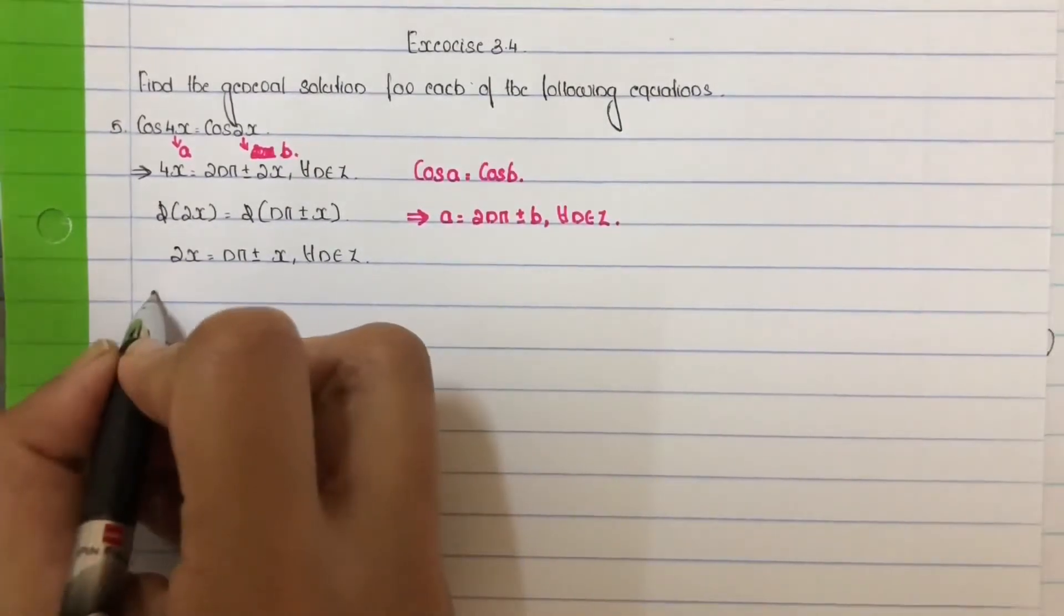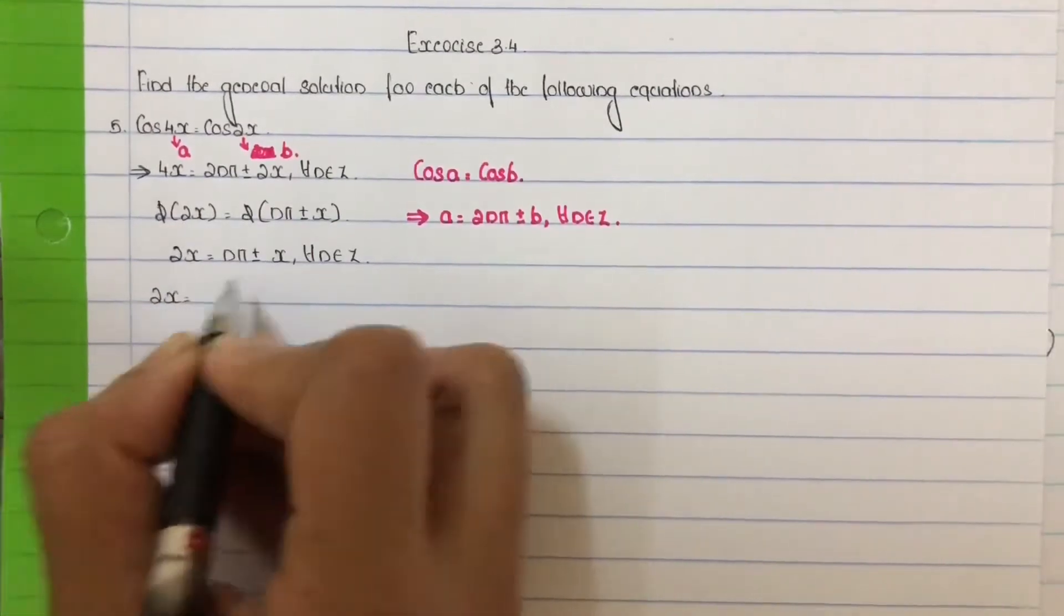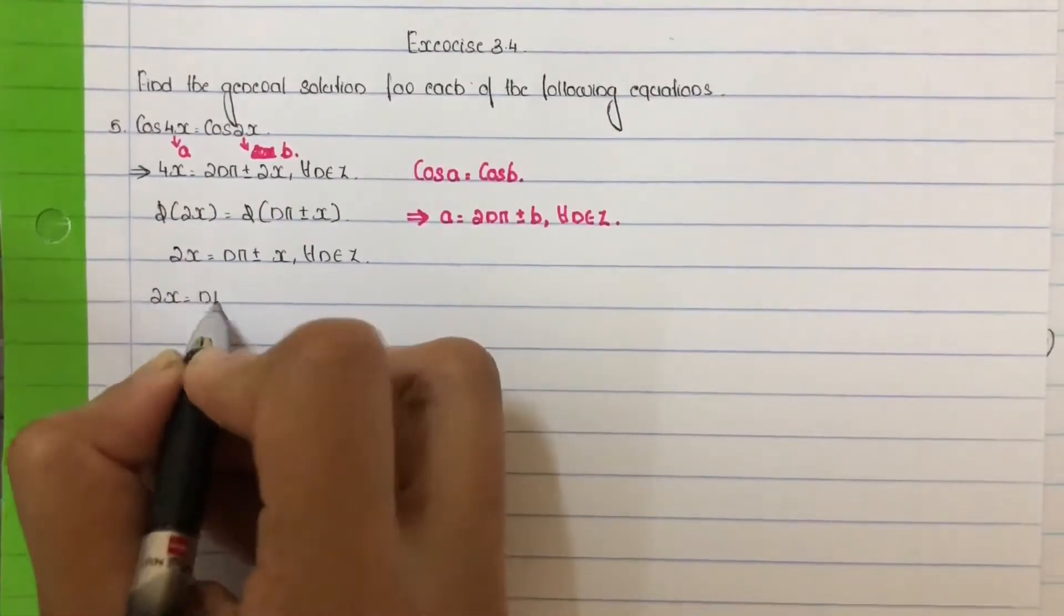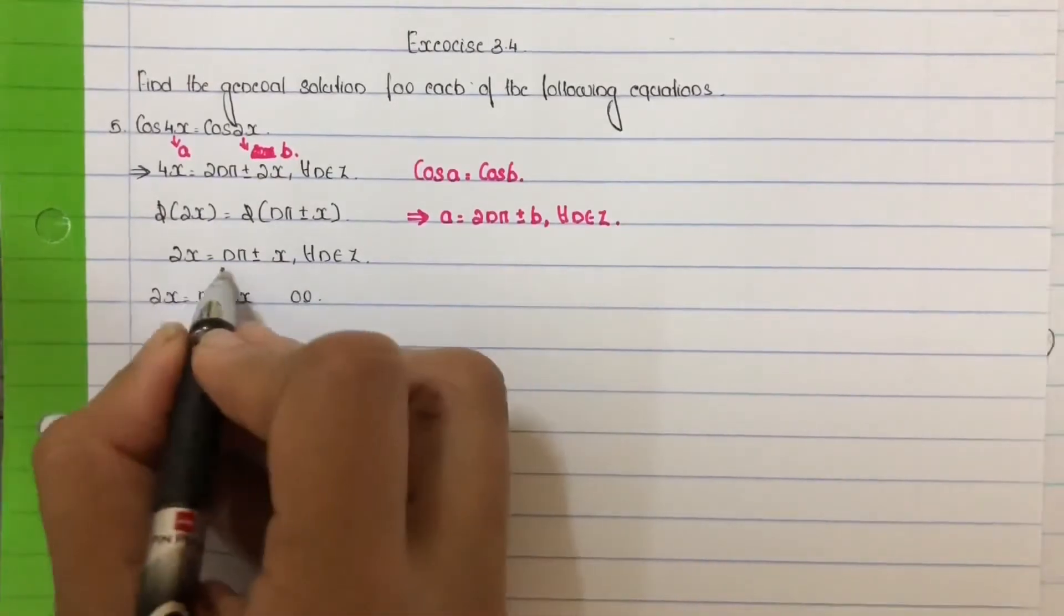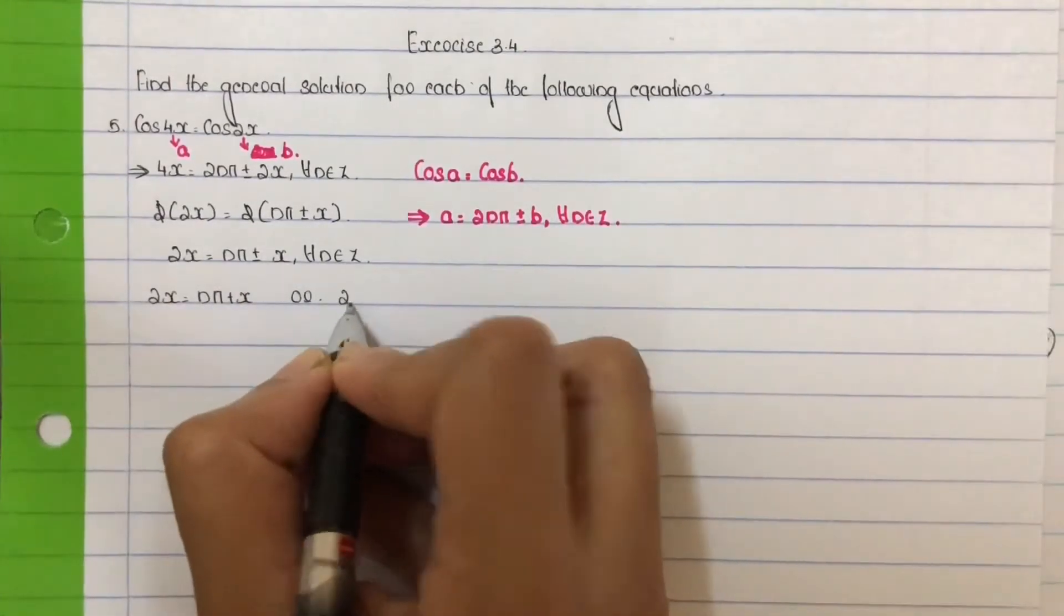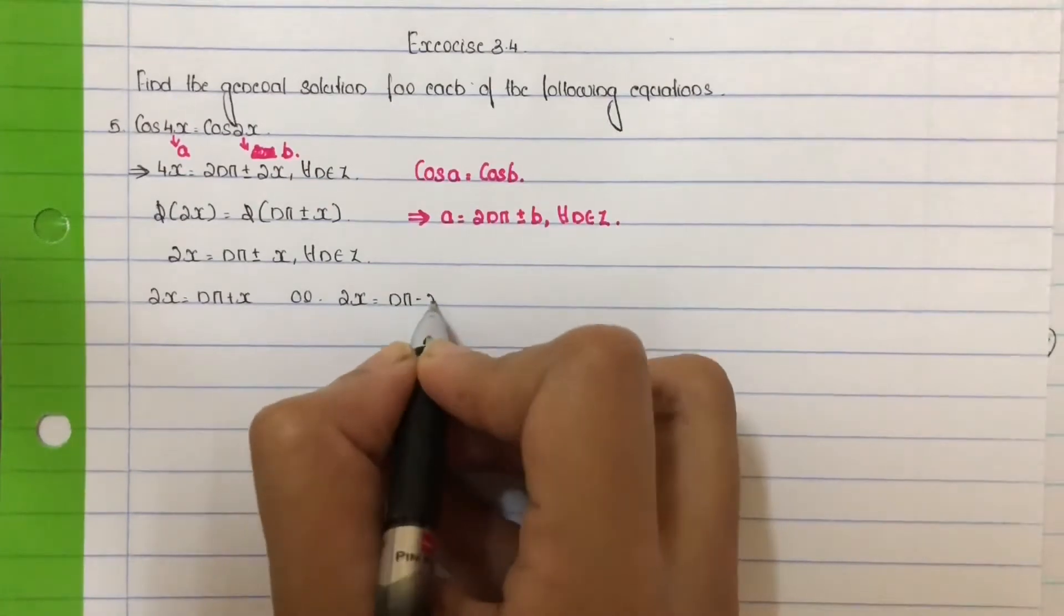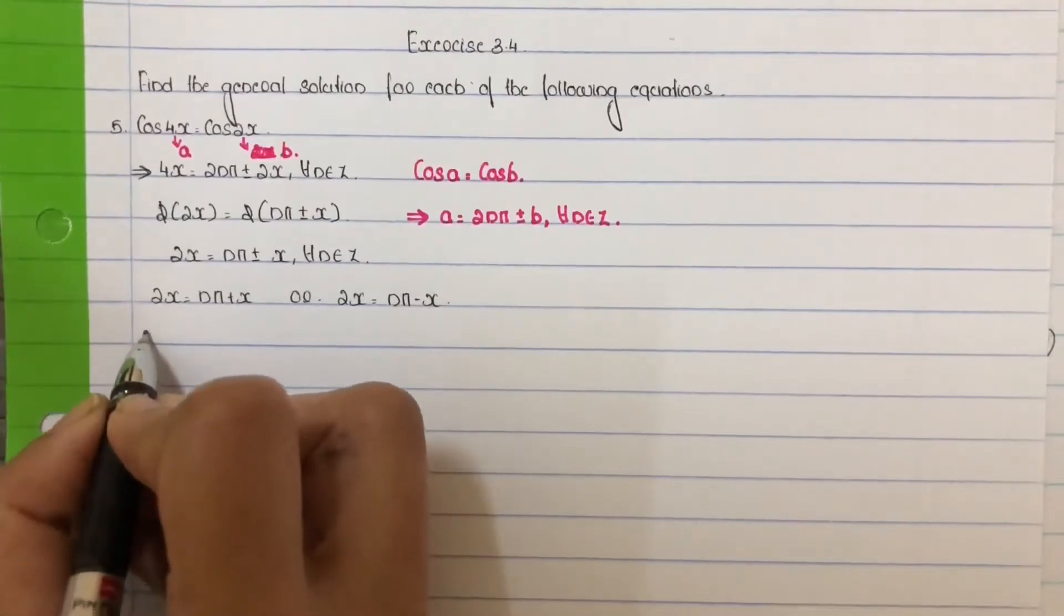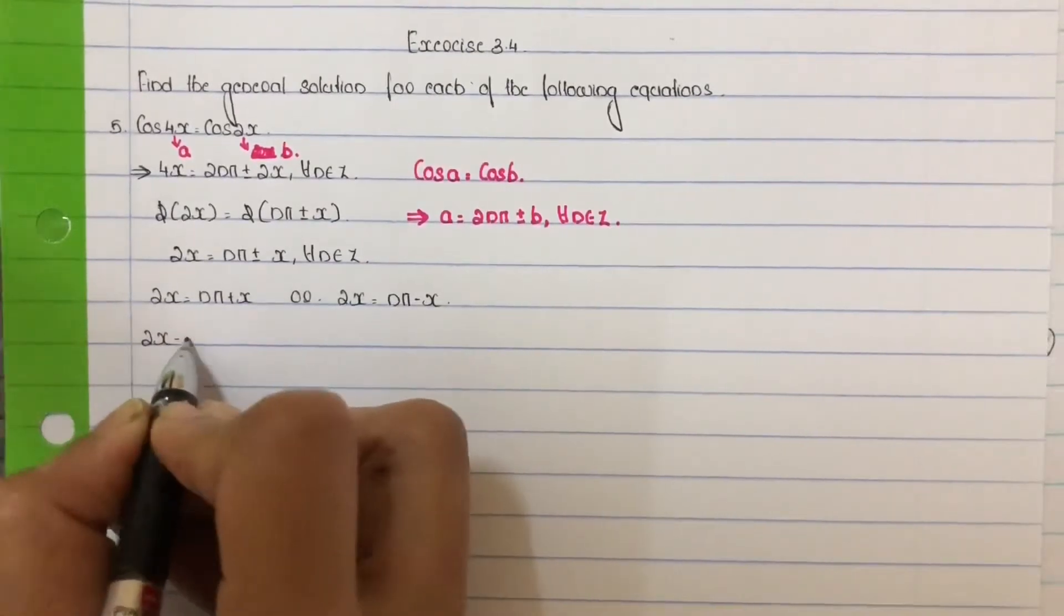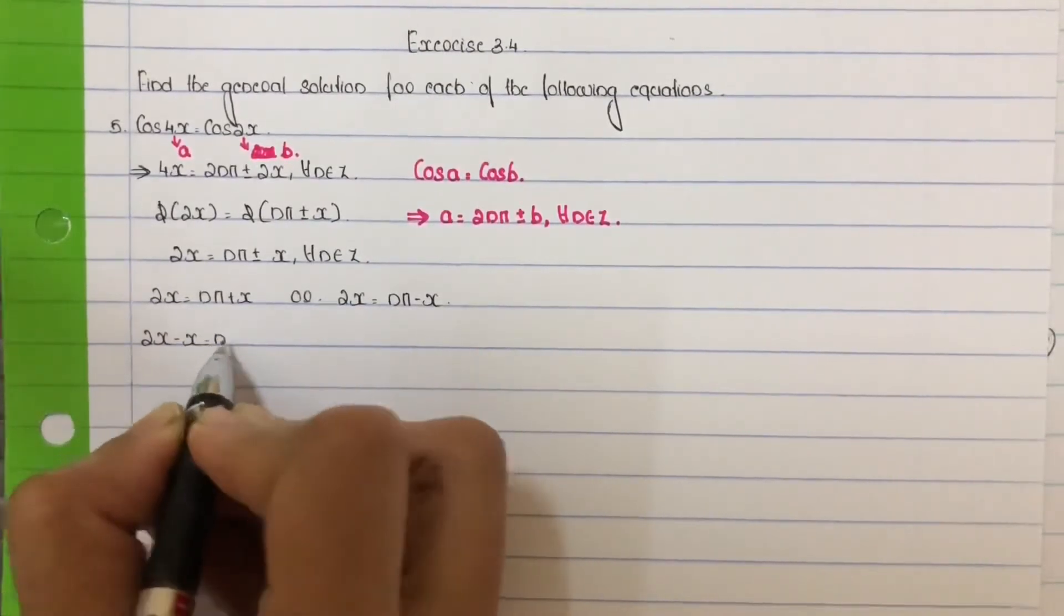Next split this: 2x equal to nπ plus x, or 2x equal to nπ minus x. For the first case, where we have plus x, move x to the left: 2x minus x equal to nπ.